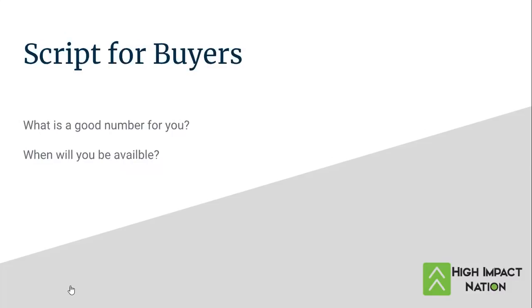Here's my script for buyers. 'What's a good number for you? When will you be available?' You notice a pattern? This one is just as easy as the other one. I'm sure some of you are thinking about chat bots and all this stuff — guys, it doesn't need to be that complicated. Remember, we talked about free. 'What's a good number for you?' They give you their number. You say, 'Fantastic, when will you be available?' They give you a time, you set it up in your day planner. That's it. A lot of agents are just making this whole Facebook thing too difficult.